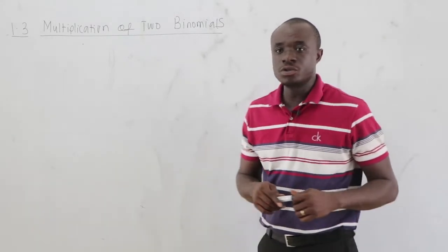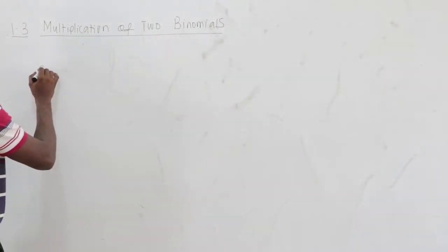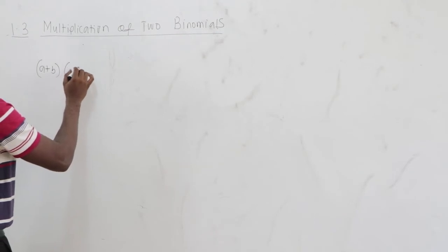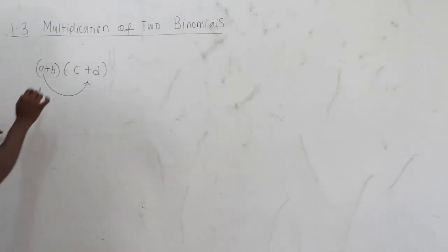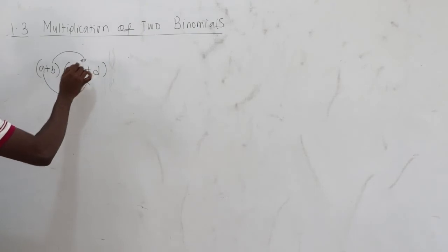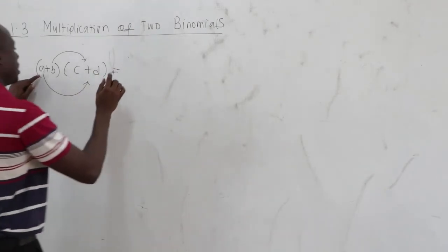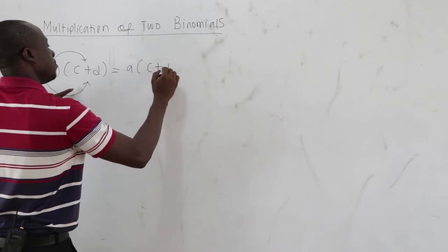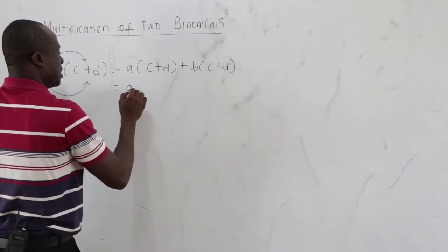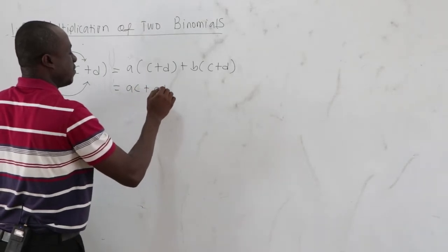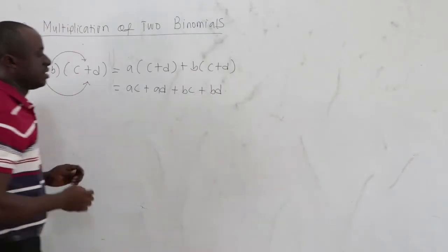Now let's consider multiplication of two binomials. Here we apply the distributive law repeatedly. If we have a plus b times c plus d: take A and multiply by everything in c plus d, then take B and multiply by everything in c plus d. This gives AC plus AD plus BC plus BD.